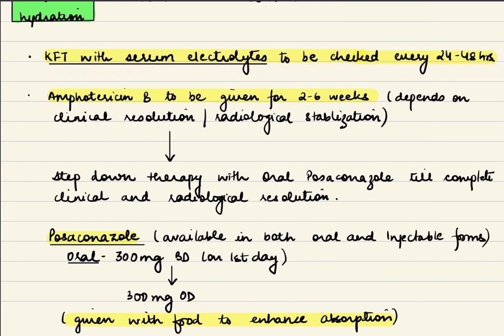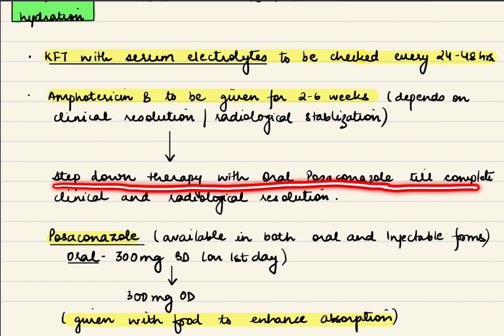How long do we give Amphotericin B? For at least 2 to 6 weeks, minimum 2 weeks up to 6 weeks depending on clinical resolution and radiological stabilization. When the disease has stabilized, we shift to step-down therapy with oral posaconazole, continued till complete clinical and radiological resolution.